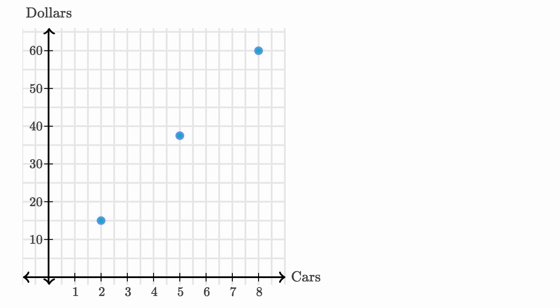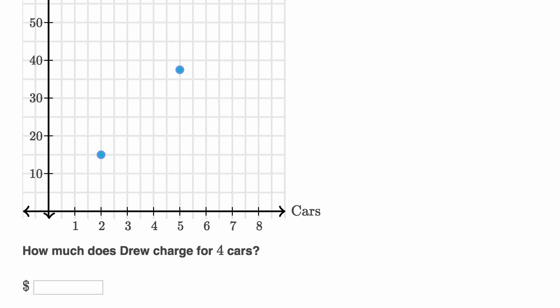But then they ask us down here, they say how much does Drew charge for 4 cars? Well, if it's $15 for 2 cars, then 4 cars would be twice as much. So it would be $30 for 4 cars. We have the same ratio.